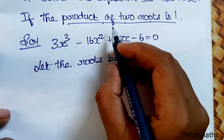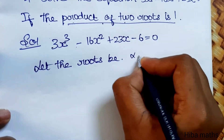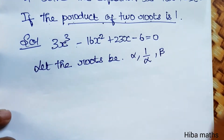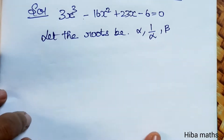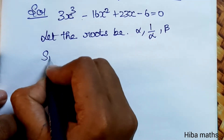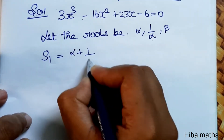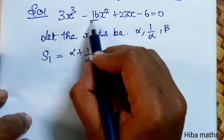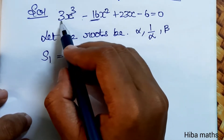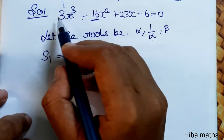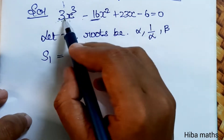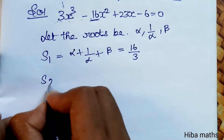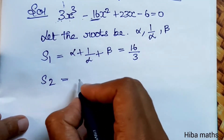Let the roots be α, 1/α, and β, since the product of 2 roots is equal to 1, i.e., α × (1/α) = 1. Now we will write S1, S2, S3. S1 = α + 1/α + β.